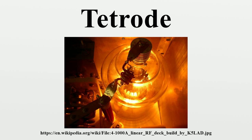The space charge grid tube was the first type of tetrode to appear. In the course of his research into the action of the audion triode tube of Lee de Forest, Irving Langmuir found that the action of the heated thermionic cathode was to create a space charge, or cloud of electrons, around the cathode. This cloud acted as a virtual cathode with low applied anode voltage. Many of the electrons in the space charge returned to the cathode and did not contribute to the anode current.